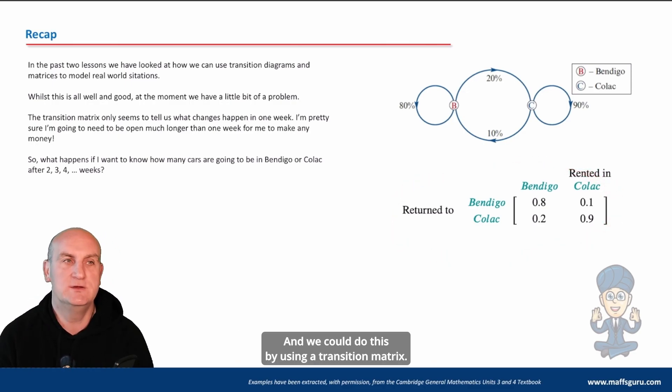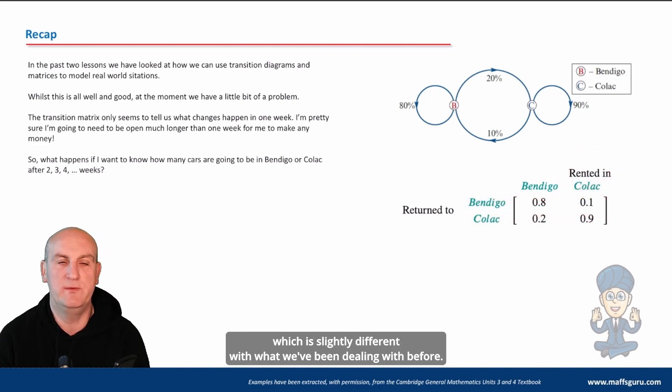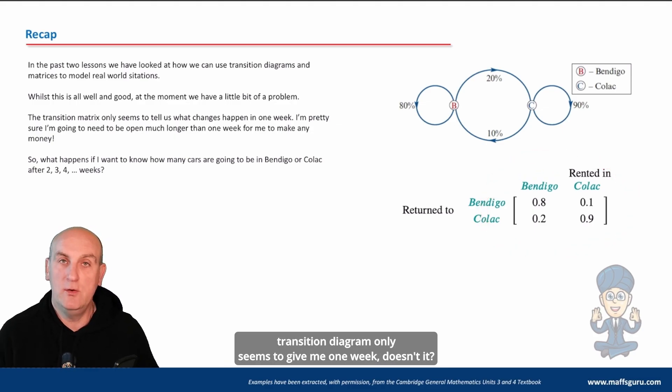We could do this by using a transition matrix, and we had to make sure that we're very careful that the columns were our start and the rows were our end, which is slightly different from what we've been dealing with before. But I've got a bit of a problem because at the moment this transition diagram only seems to give me one week, doesn't it?